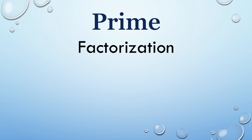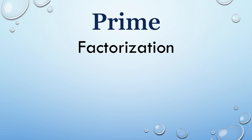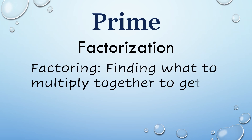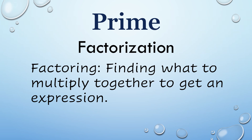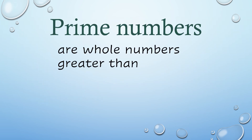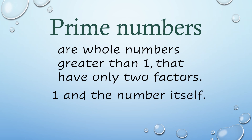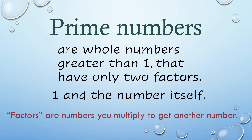What is Prime Factorization? From the word itself, you probably know that it involves factoring. Factoring is finding what to multiply together to get an expression. But what does it mean by Prime? Prime numbers are whole numbers greater than 1 that have only two factors — 1 and the number itself. Take note that factors are numbers you multiply to get another number.